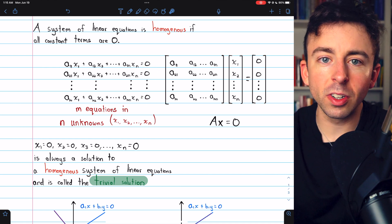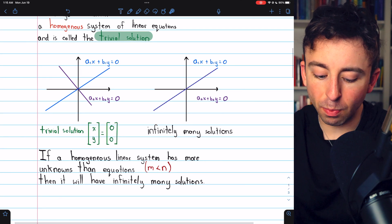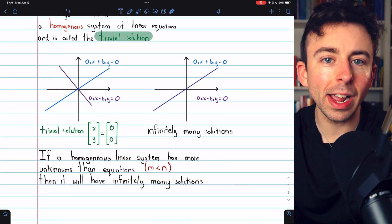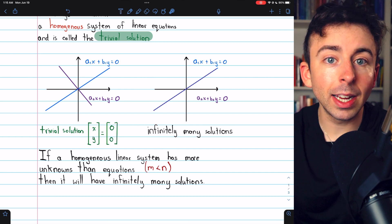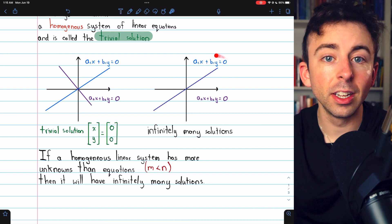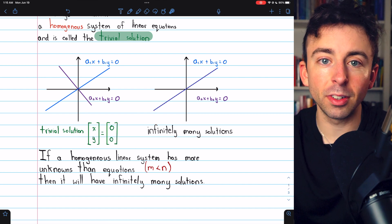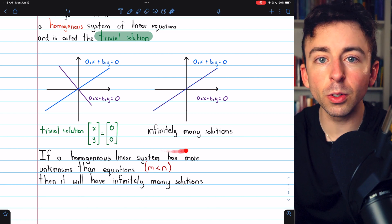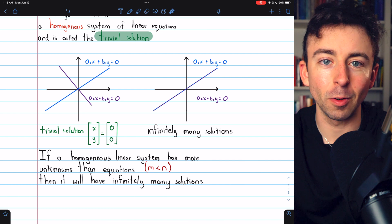Again, you know that a homogeneous linear system will have infinitely many solutions if it has more unknowns than equations. And we'll prove that next time. Link in the description. But keep in mind, it's also possible, with the same number of equations and unknowns, to have infinitely many solutions. But a homogeneous linear system will either have infinitely many solutions or only the trivial solution of all 0s.